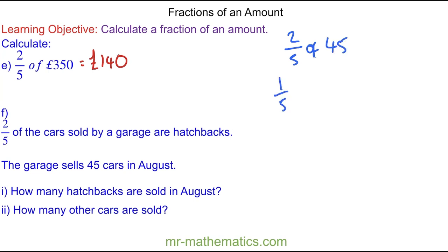We'll work out one fifth and then we'll double it. So one fifth of 45 is 45 divided by five, which is nine. And then we're going to double it to work out two fifths. So that is 18.